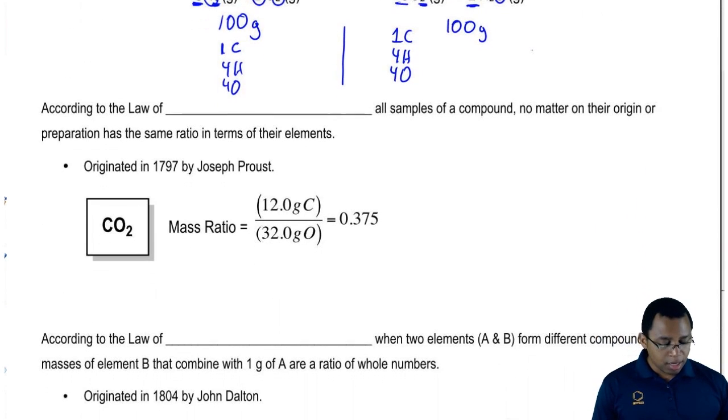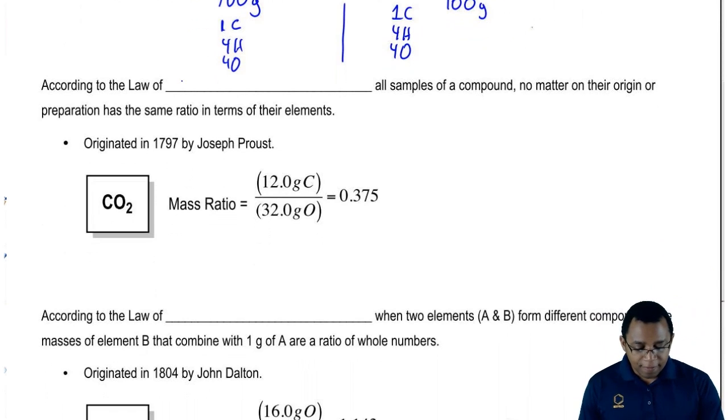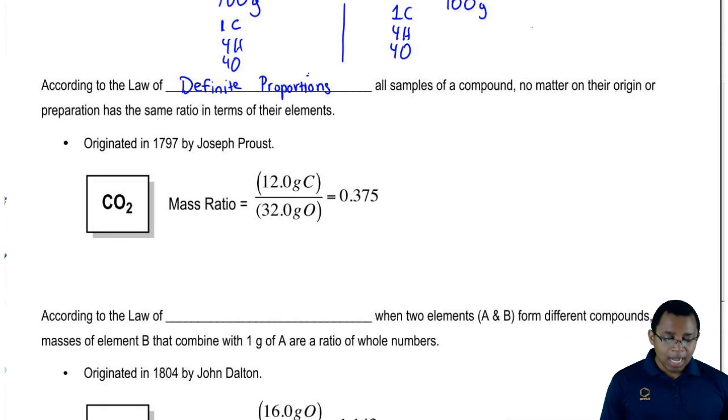A second important atomic theory is according to the law of definite proportions. All samples of a compound, no matter their origin or preparation, have the same ratio in terms of their elements.